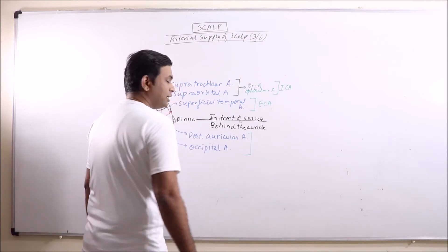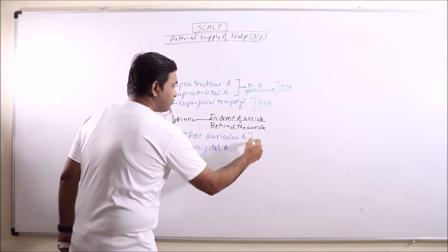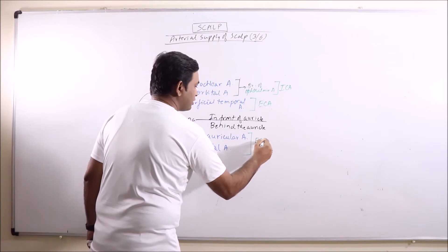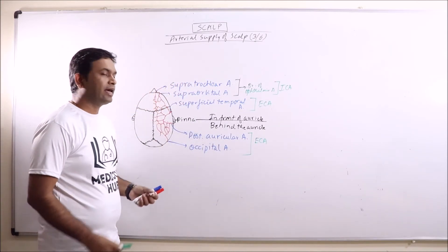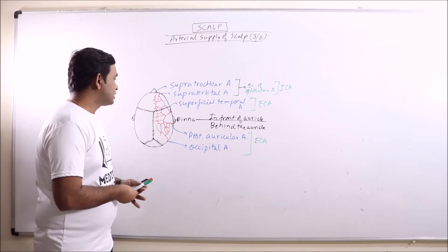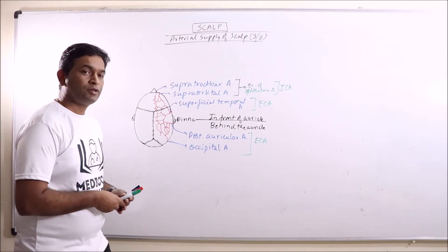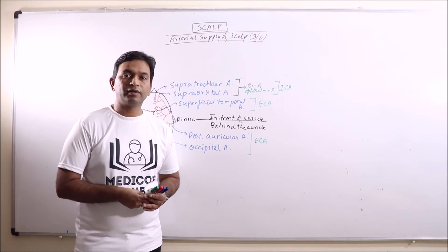Posterior auricular artery and occipital artery are branches from external carotid artery. So these arteries anastomose on the scalp and supply blood to the scalp. This is the arterial supply of scalp.